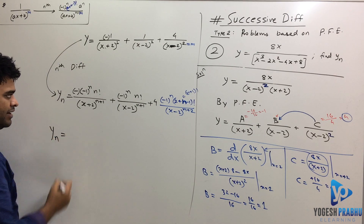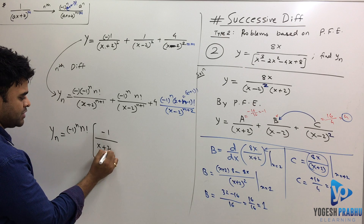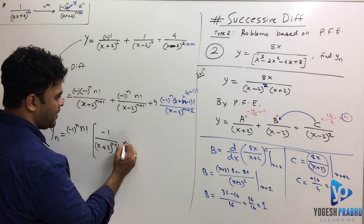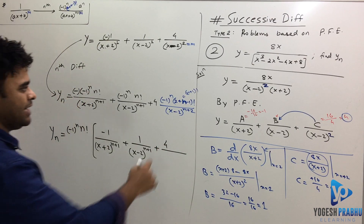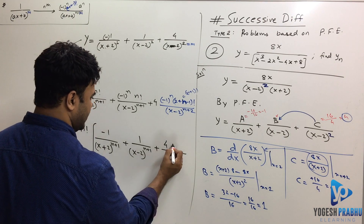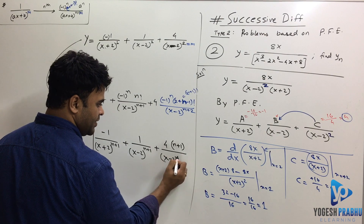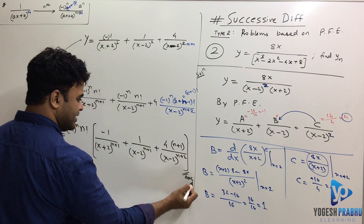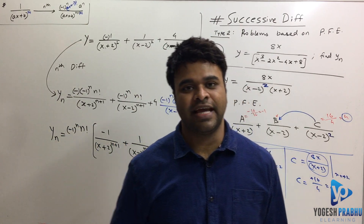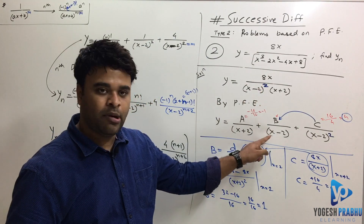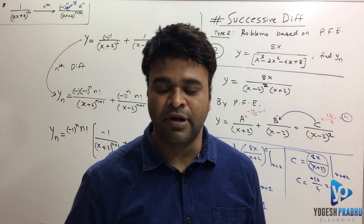Taking n factorial out, the final answer is: y_n equals (minus 1) raised to n times n factorial, multiplied by [ minus 1 over (x plus 2) raised to (n plus 1), plus 1 over (x minus 2) raised to (n plus 1), plus 4 times (n plus 1) over (x minus 2) raised to (n plus 2) ]. This problem is solved using partial fraction expansion to convert the product into sum form, then applying the nth derivative formula.